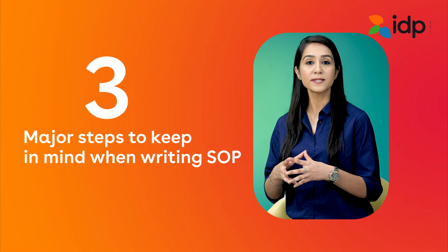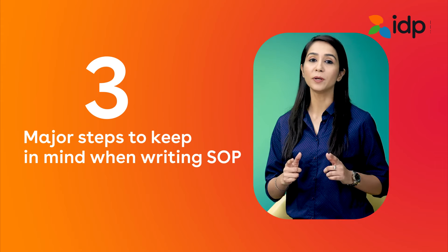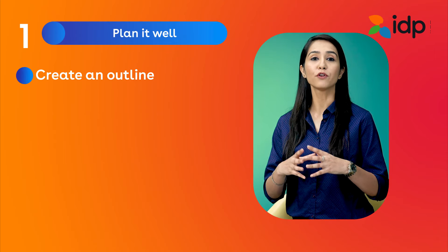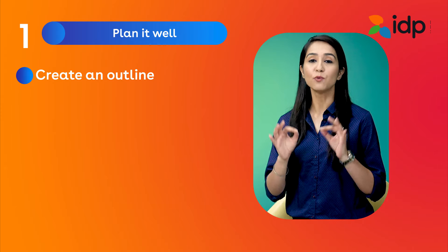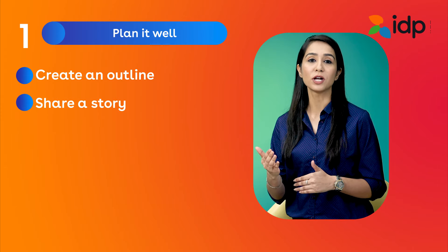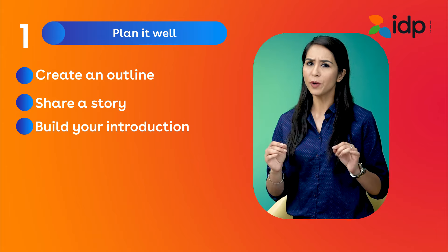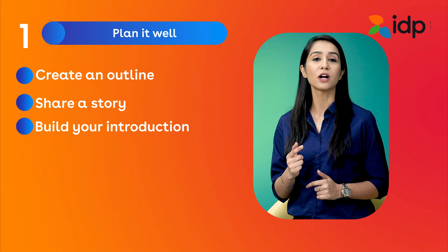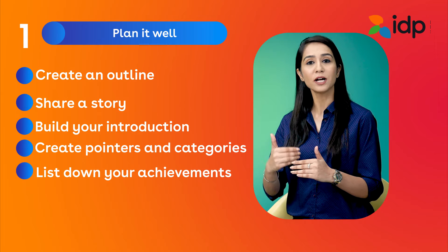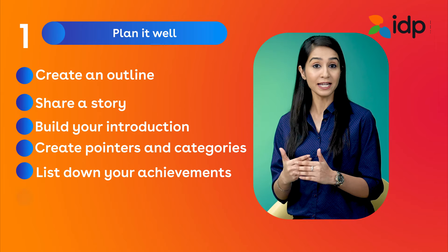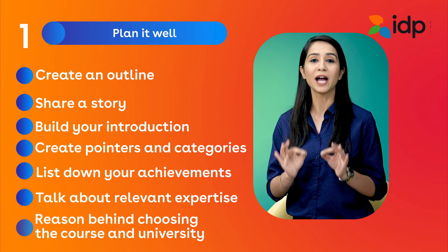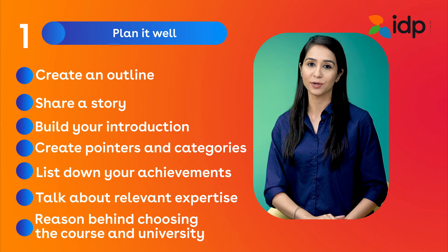Here are the three major steps you need to keep in mind while writing your SOP. Plan it well — create an outline of your SOP and work accordingly. Share a story that developed your interest in your subject in a good way to build your introduction. Create pointers and categories, list down your relevant achievements and expertise, and most importantly, your reason behind choosing the course and the university.